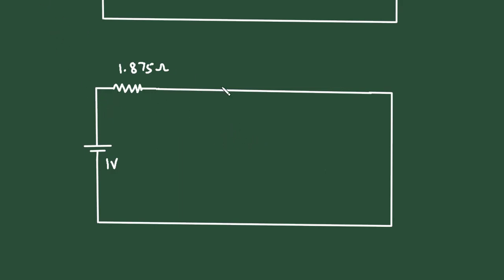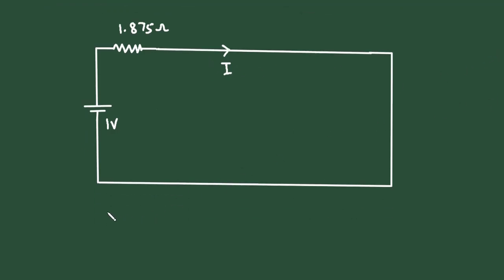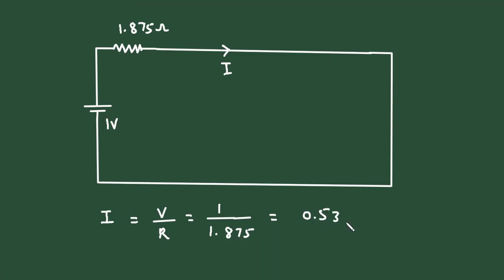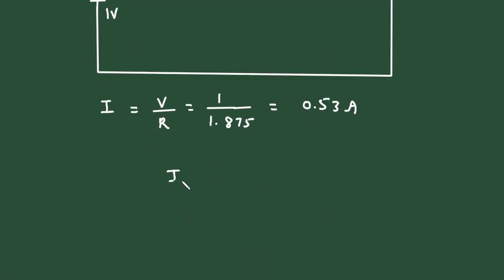Now we have to find the total current I. According to Ohm's law, current I equals V divided by R. The voltage is 1 volt and the resistance is 1.875 ohm. So I equals 1 divided by 1.875, which equals approximately 0.53 ampere. Therefore, I equals 0.53 ampere.